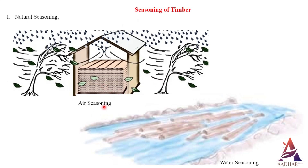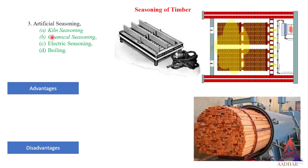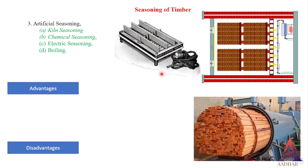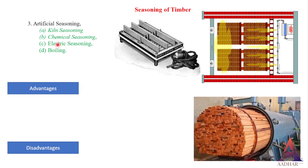Artificial seasoning of timber. Natural seasoning gives good results but takes more time, so artificial seasoning of timber has been developed nowadays. By artificial seasoning, timber is seasoned within four to five days. The different methods of artificial seasoning are: seasoning by boiling, chemical seasoning, kiln seasoning, and electrical seasoning.